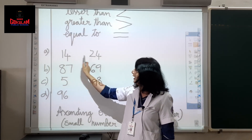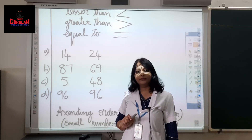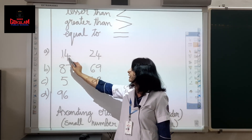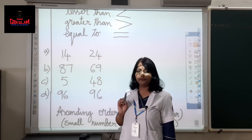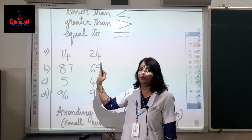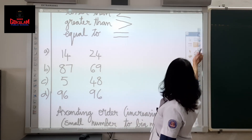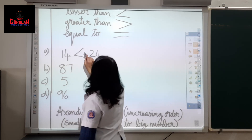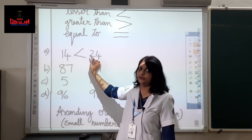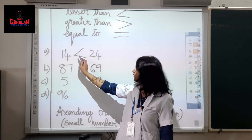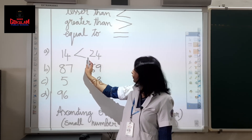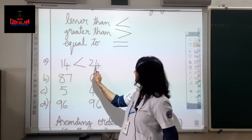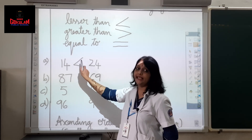First example: 14 and 24. How do we compare numbers? First we look at the tens place. This is 14 and this is 24. Which number is greater? Yes, 24. Always, the open end will face the greater number. 24 is greater, so the open end faces towards 24. We read this as: 14 less than 24.